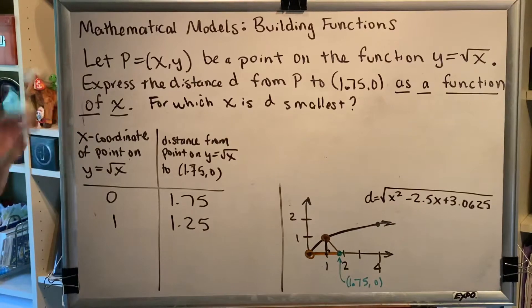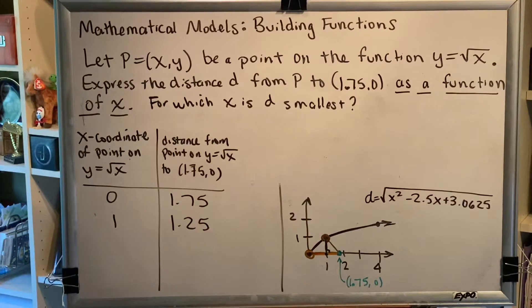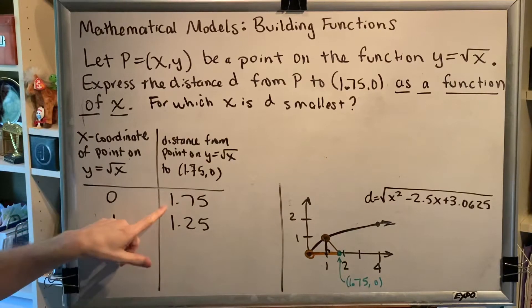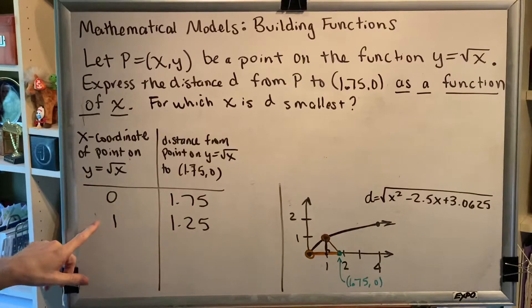This is the original problem statement, and in our most recent video we found that when x was 0, the distance was 1.75. When x was 1, the distance was 1.25.